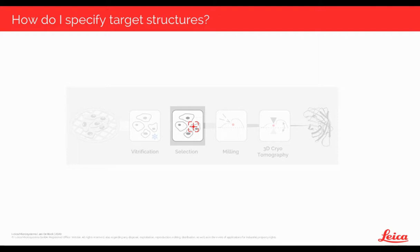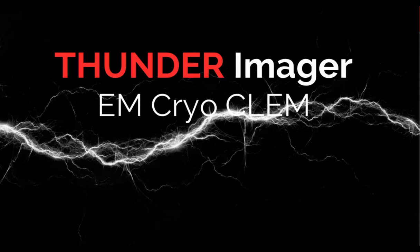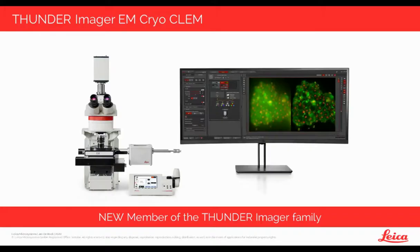The fluorescence microscope must be a cryogenic system, keeping the sample vitrified at all times during transfer and imaging. I am proud to introduce the Thunder Imager EM CryoCLEM, which serves exactly these needs. The Thunder Imager CryoCLEM is a fully motorized, upright, camera-based microscope, and it belongs to a whole family of imaging systems providing the new Leica Thunder technology.